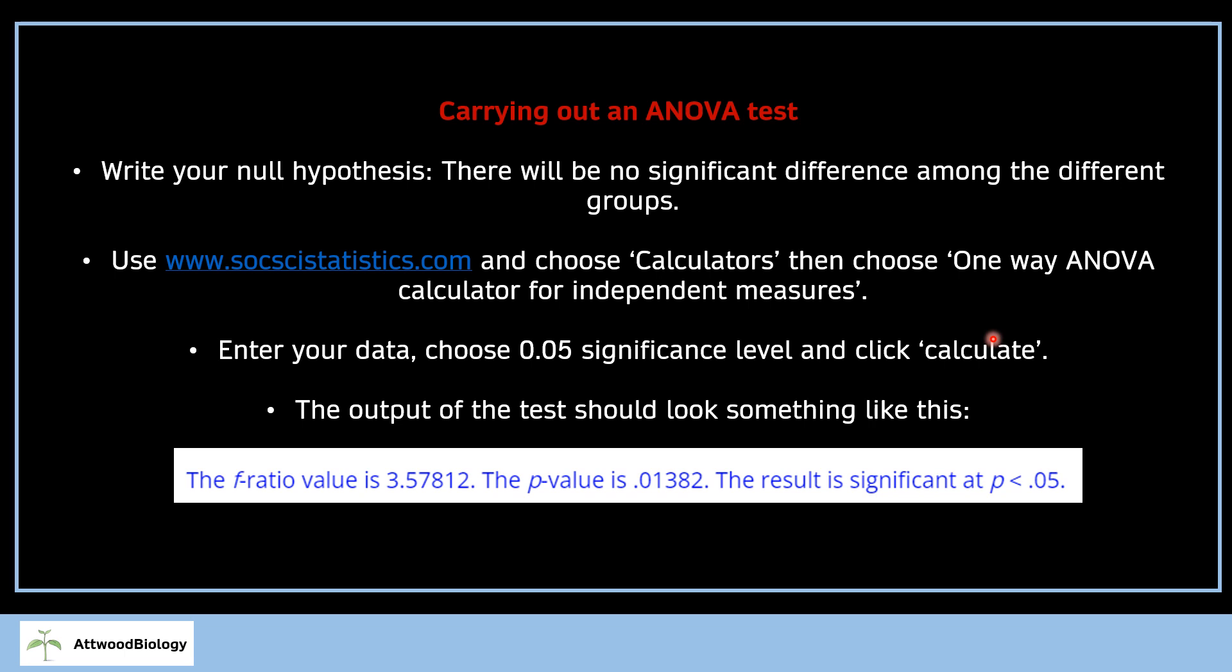You're then going to enter your data for your different groups that you've got. So if it was different genres of music, you'll enter each different genre. And you're going to choose the 0.05 significance level and click calculate.